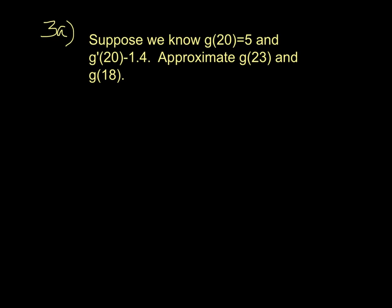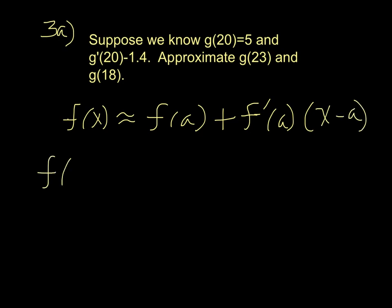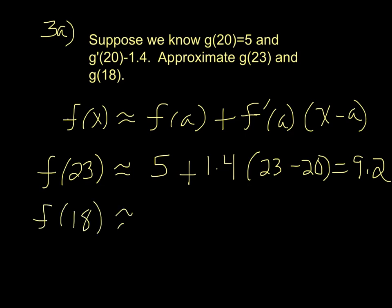That's fairly straightforward. You're going to use the formula that I gave you earlier, f(x) is approximately f(a) plus the derivative of f(a) times x minus a. So that means that f(23) is approximately 5 plus 1.4 times 23 minus 20, which is 9.2. And f(18) is approximately 5 plus 1.4, so we're just plugging in the values that were given to us in the formula. And now it's 18 minus 20, which is 2.2.